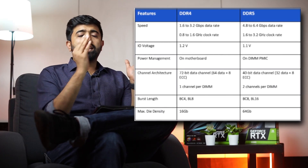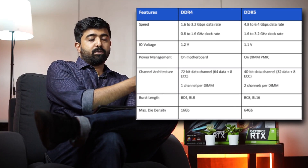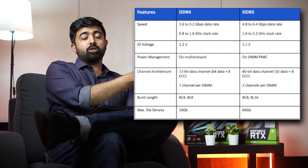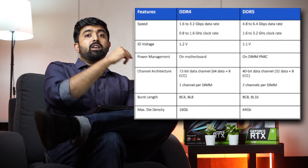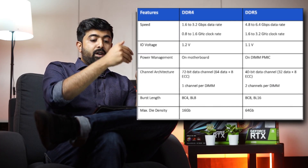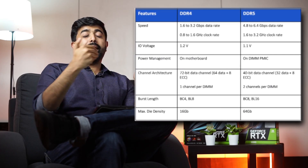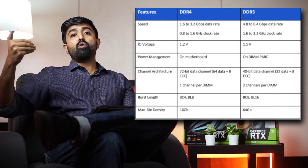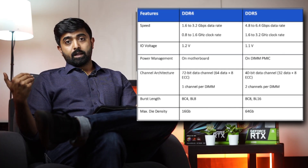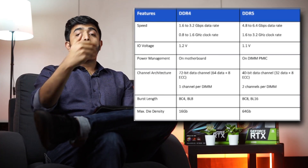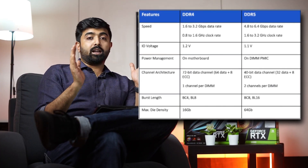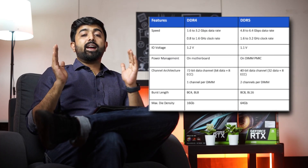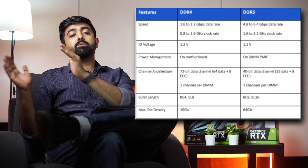Quick comparison karte hain DDR5 se — jab launch hoga, DDR5 will have up to 8400 megahertz of memory. Not only that, uska maximum single stick 512GB tak bhi ja sakta hai on server-based boards. Exciting times!